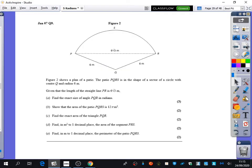So for the exam question you wanted to have a look at, it's this one that we've got here. It says figure two shows the plan of a patio. The patio PQRS is in the shape of a sector of a circle with center Q and radius six. Given that the length of the straight line PR is six root three...